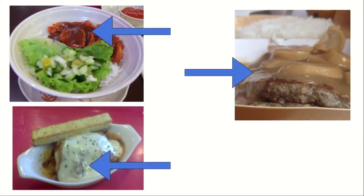Listen carefully. I have here 3 pictures of different foods. Are you familiar with the foods you see? I'm sure you are, because these foods are offered in some of the famous fast food chains here in the Philippines. Picture number 1 is the sweet and sour chicken from Chow King. Picture number 2 is the lasagna supreme from Greenwich. And picture number 3 is the burger steak from Jollibee. Now, what have you noticed in these foods?